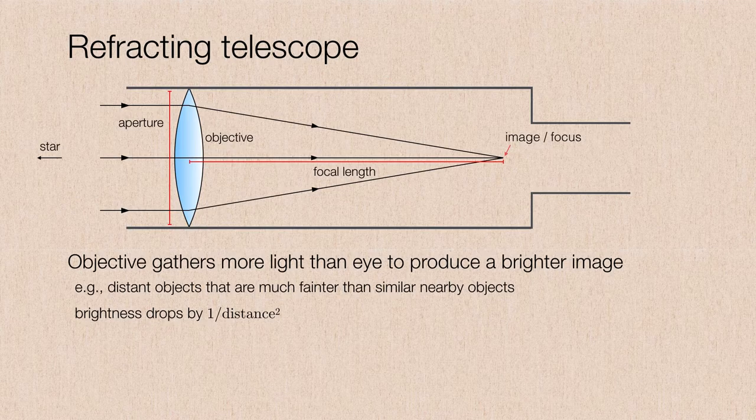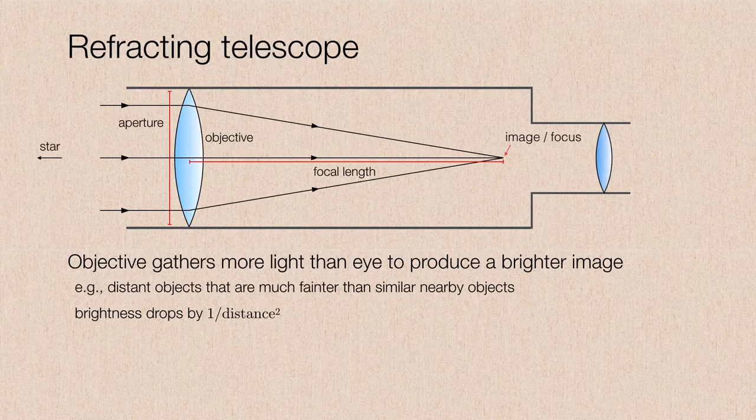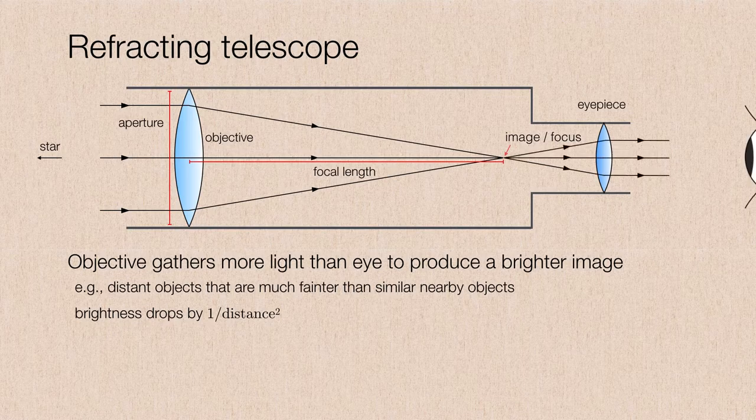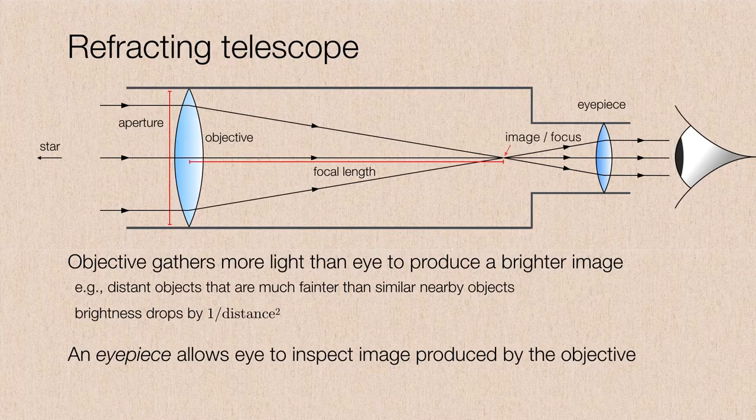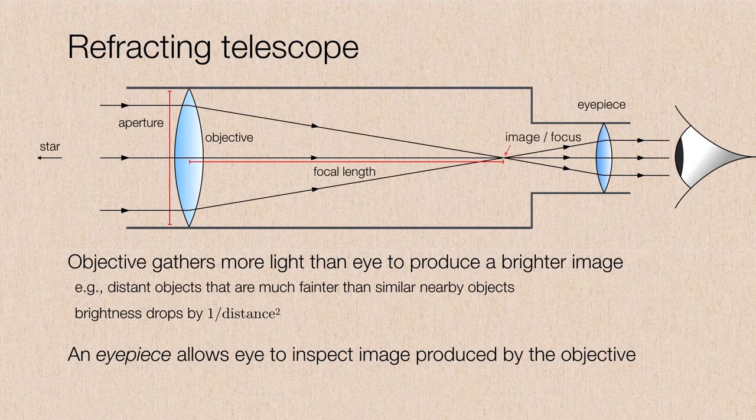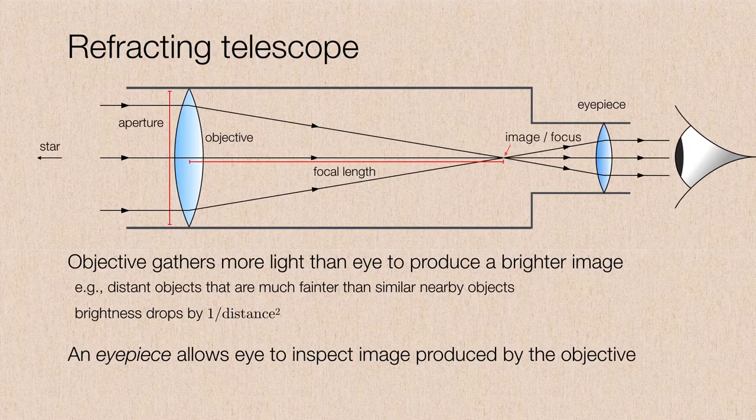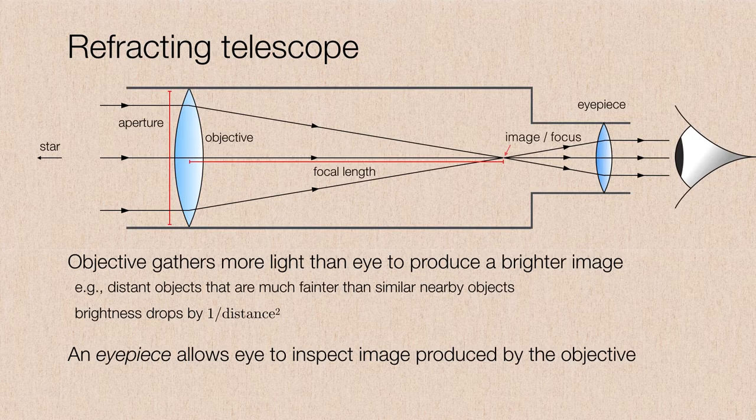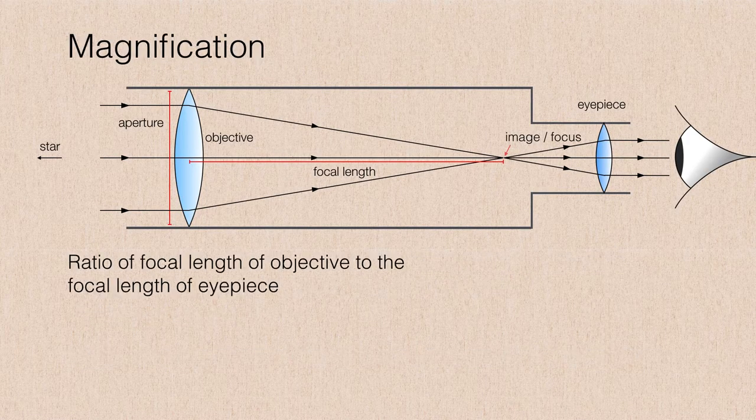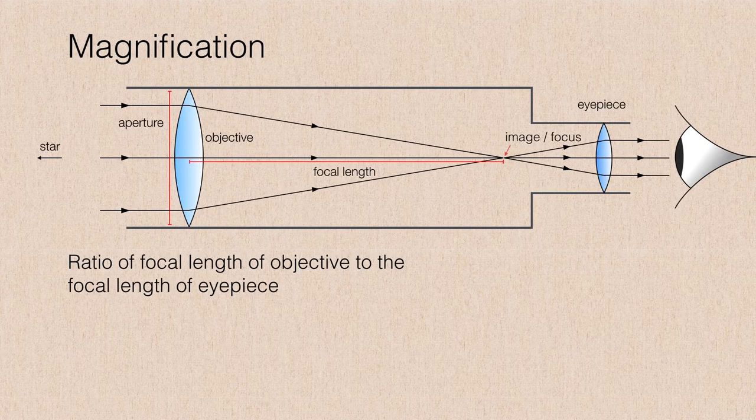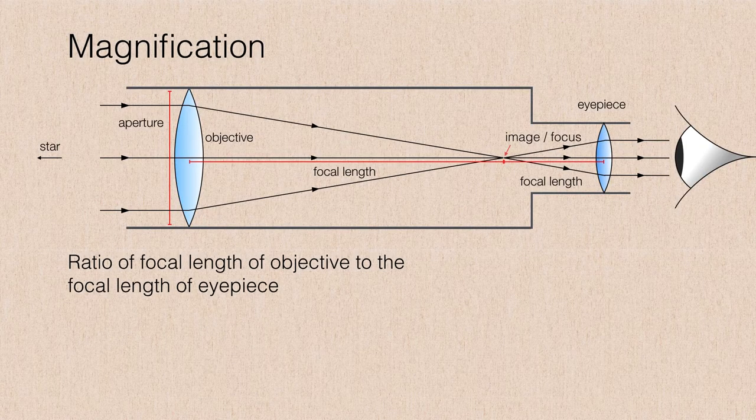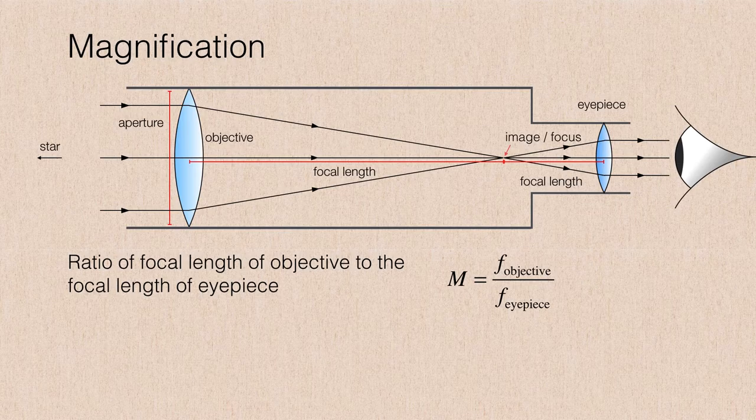Now, in order to inspect this image, we need to employ a second lens. This is commonly known as an eyepiece. And what this does is it lets the light rays spread apart once again and then focuses them into an image. So it basically magnifies the image and allows the eye to actually see the image produced by the objective. The eyepiece is also going to have its own focal length. And therefore, the ratio of the two focal lengths, the ratio of the objective's focal length to the eyepiece's focal length, is what we refer to as the magnification.